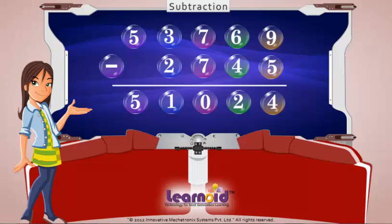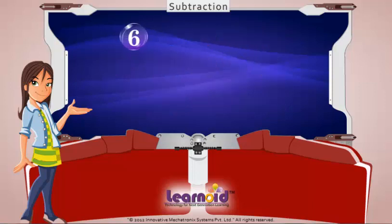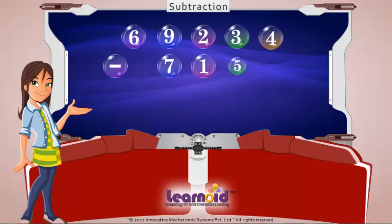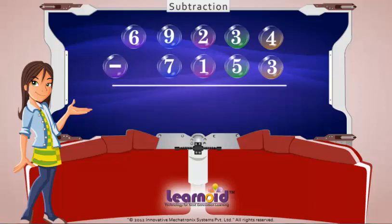Let's see one example. The first number is 609,234. The second number is 7,153. And now subtract.